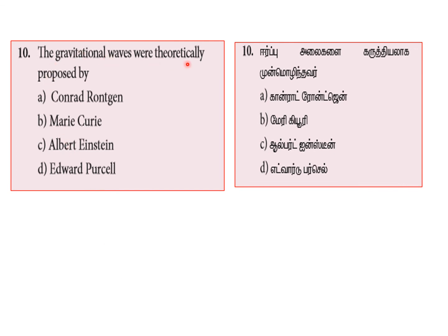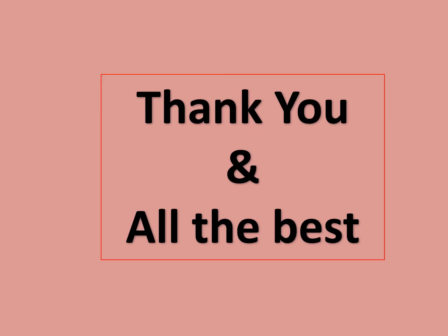Option E is the correct answer for the particle giving mass to protons and neutrons. The gravitational waves were theoretically proposed by Albert Einstein — option C is the correct answer. This is a very simple, easy lesson. If you have any doubt, put it in the comments. Thank you, all the best.